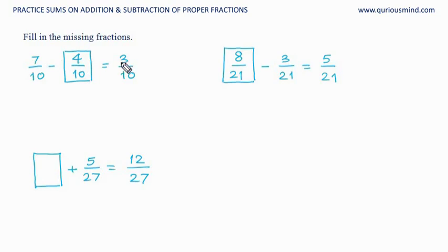Here also, 7 minus something is 3, so just bring it here: 7 minus 3 is 4, so it should be 4 here. Answer's denominator and the denominator of this fraction is same, so here also the denominator would be same, 27. Something plus 5 is 12, so that something has to be 7, because 7 plus 5 is 12.